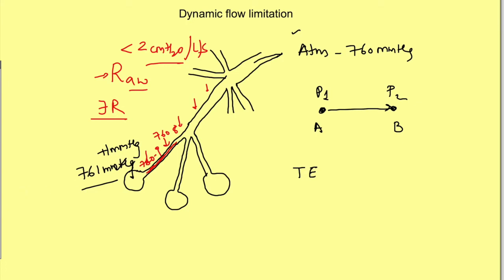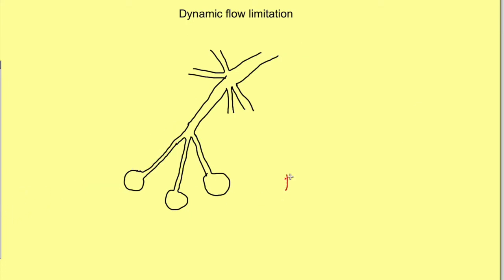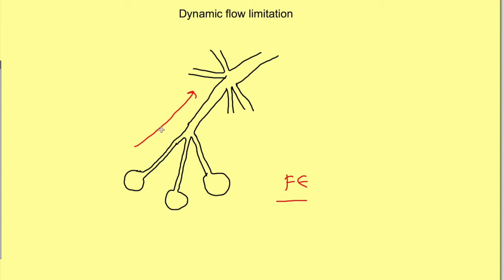Now let us see what happens in forceful expiration. When air flow rate increases, the pressure drop along the airways is much, much more than what we saw in tidal expiration. In tidal expiration the drop was very minute, but in forceful expiration the pressure drop is much more. This is known as the dynamic component of resistance, occurring due to the increase in the velocity of flow.